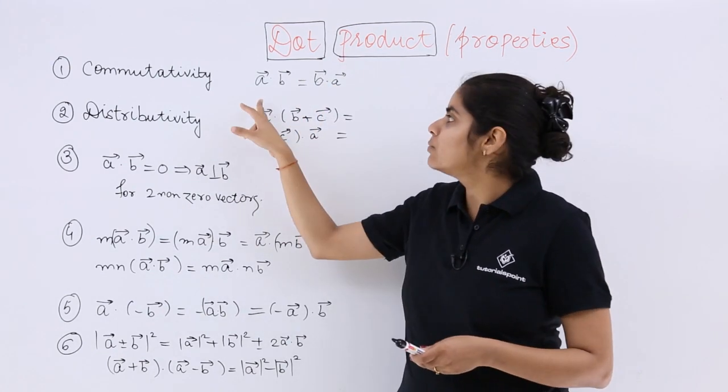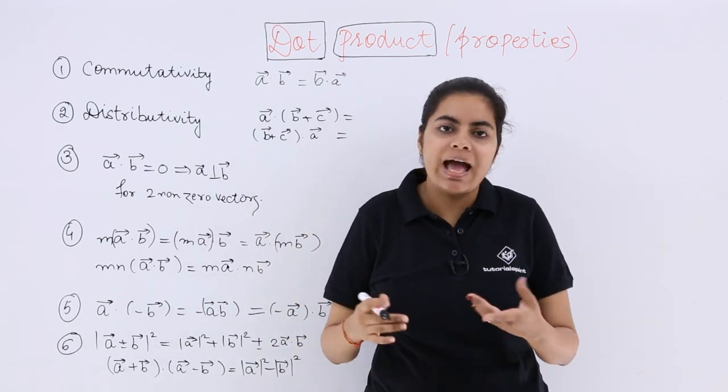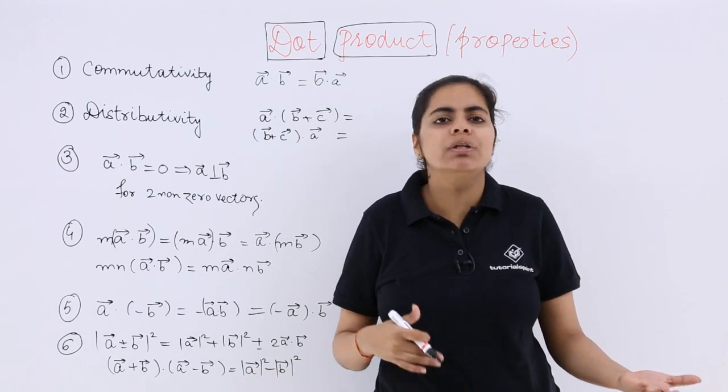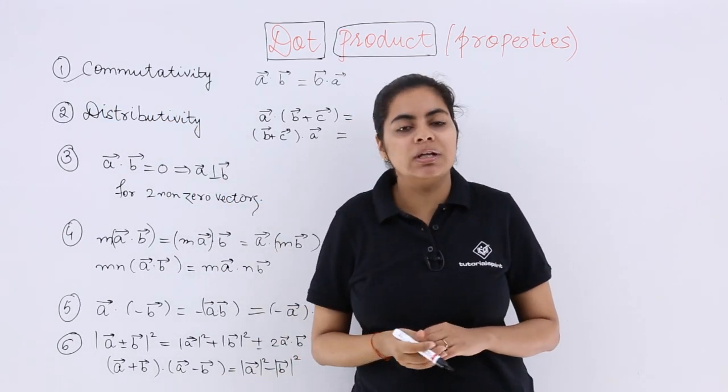Why? Because the first means A.B cos theta, the second means B.A cos theta, and you know A.B equals B.A. That means 2 times 3 equals 3 times 2. So that is commutativity. Let's put a tick mark.